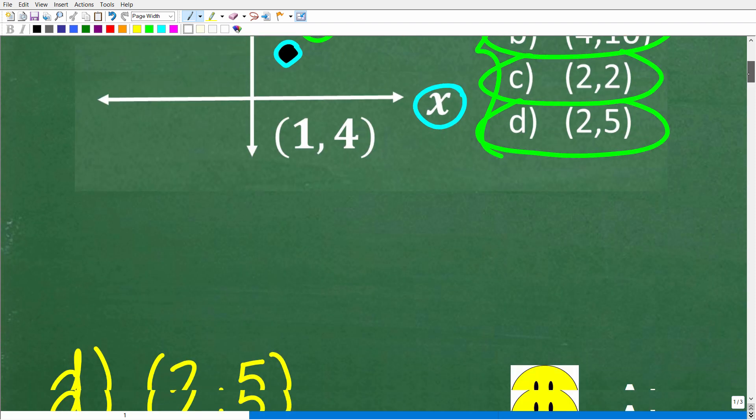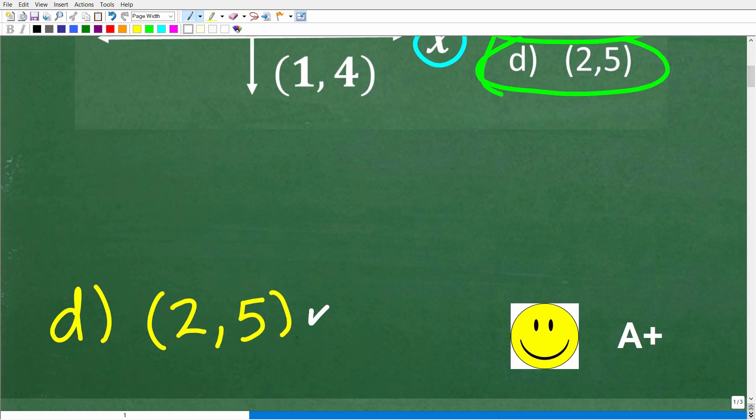So let's go ahead and take a look at the correct answer. The correct answer is D, which is 2, 5. Now if you got this right, well you're definitely going to get a happy face and A+.